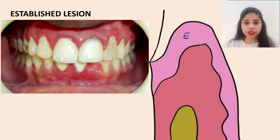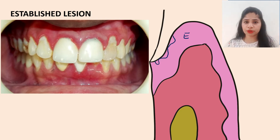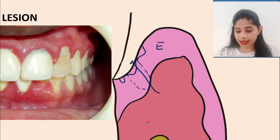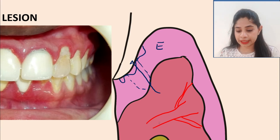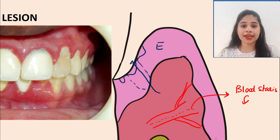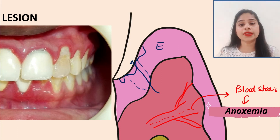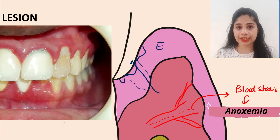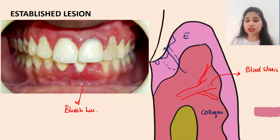Histopathologically in Stage 3, both the junctional epithelium and sulcular epithelium show ulceration — there is a break in continuity, and the connective tissue is exposed to the oral cavity. In the connective tissue, blood vessel proliferation continues. Due to vasodilation and increased vascular permeability, blood flow becomes sluggish — termed blood stasis. This results in a localized area of anoxemia, a deficiency in oxygen concentration. Blood stasis, decreased venous return, and decreased oxygen concentration together produce the characteristic bluish hue of the gingiva.